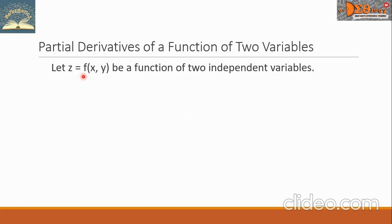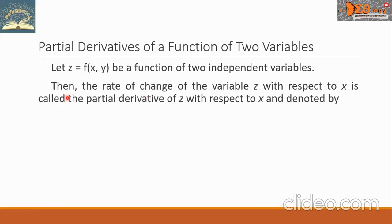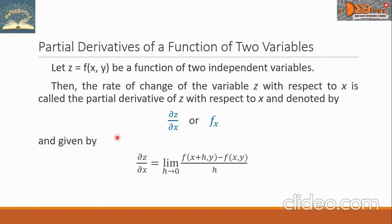Let z equals f of xy be a function of two independent variables. The rate of change of the variable z with respect to x is called the partial derivative of z with respect to x, denoted by ∂z/∂x or f sub x. It is given by the limit of f(x+h, y) minus f(x, y), all over h, as h approaches zero.